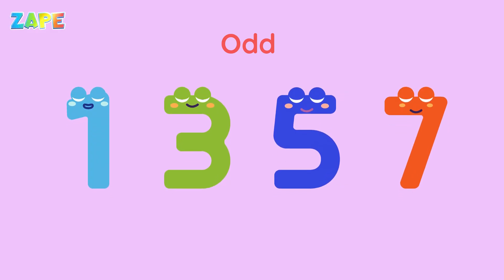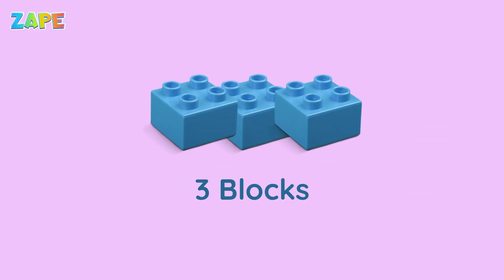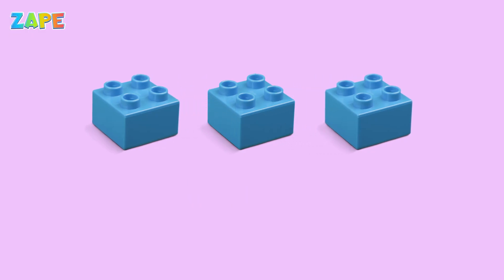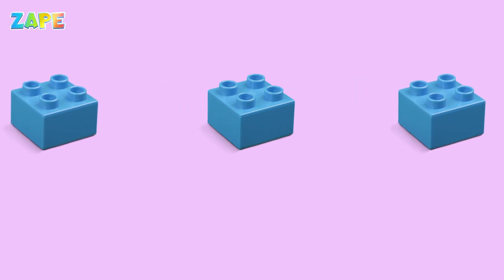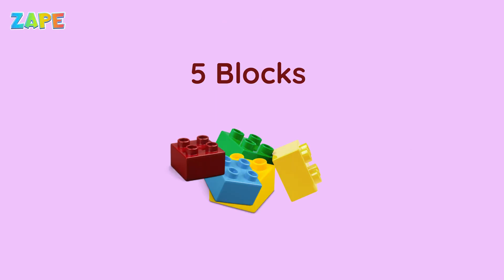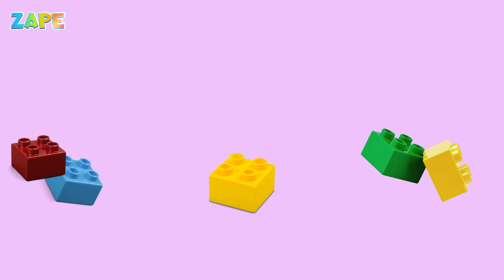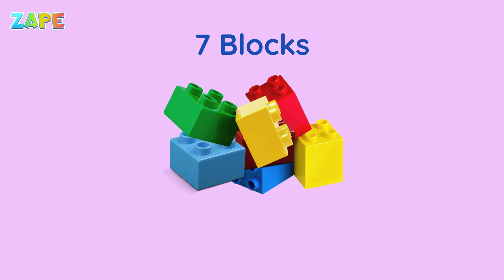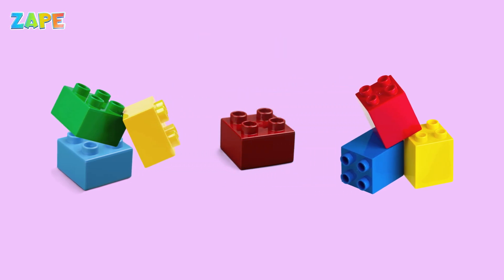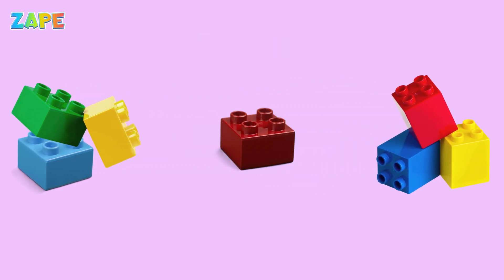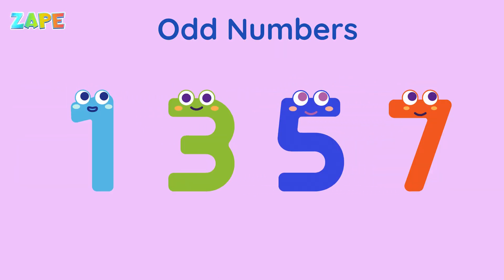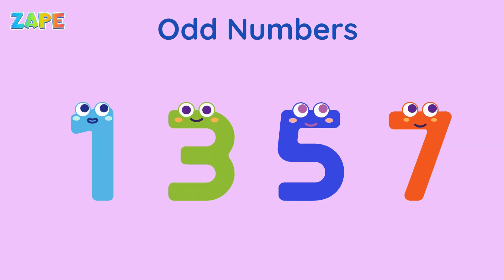Now let's check some odd numbers. Let's take three blocks: one here, one there — oops, one is left alone. That's odd. Now five blocks: two here, two there, one still left. Another odd number. And seven blocks: three and three, with one left over. Odd numbers always have a little surprise.